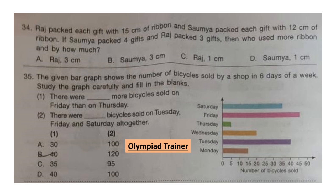Blank 2: There were how many bicycles sold on Tuesday, Friday, and Saturday altogether? On Tuesday 40, Friday 45, and Saturday 35 bicycles were sold, giving a total of 120. So blank 2 is 120. The answer is option B: blank 1 is 40 and blank 2 is 120.